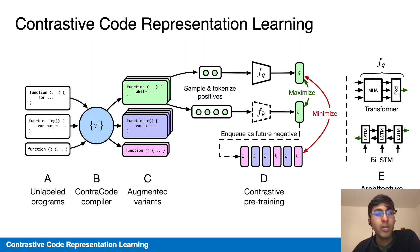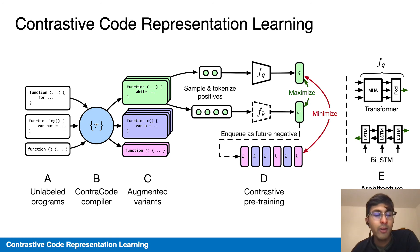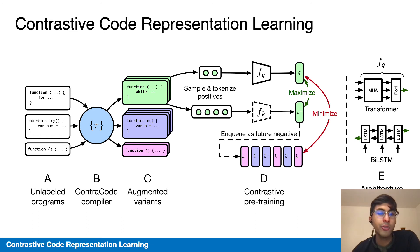We show that contrastive code representation learning is architecture-independent, allowing us to use transformers as well as bi-directional LSTMs in our experiments. The critical contribution here is in the adaptation to the code domain as well as our choice of data augmentations in the compiler.